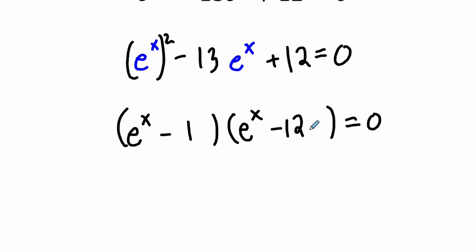But now, in order for this product to be 0, e to the x minus 1 could equal 0. So e to the x could equal 1. And e to the x could also equal 12.